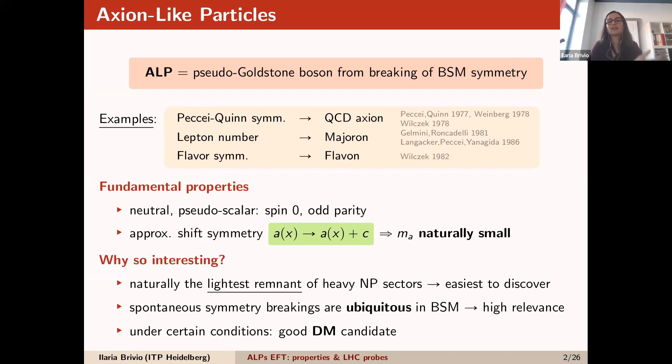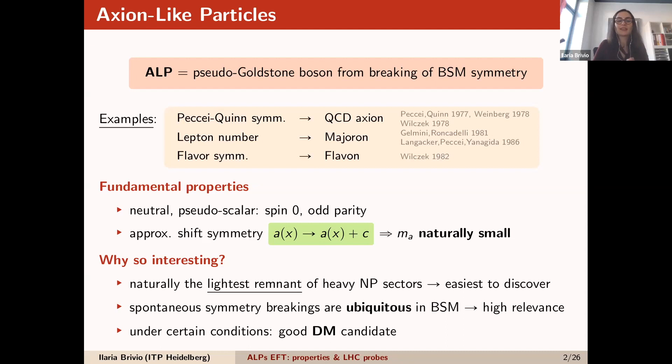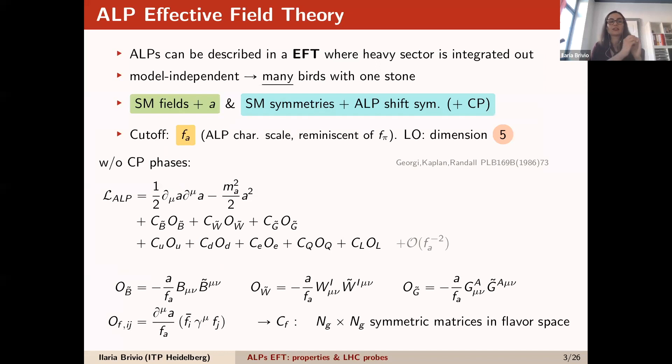You discover an ALP, and then you discover the sector that generates it, essentially. Because there are so many symmetry breakings in BSM models, one could also argue that this is really the BSM particle most likely to exist in some form. Under certain conditions, it also makes a good dark matter candidate. This is really a unique combination of interesting elements that makes it the biggest motivation to study axion-like particles.